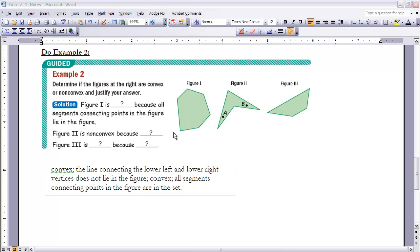Here's the answers then to those four question marks. Figure one is convex, because the segment connecting the points in the figure lie in the figure. Figure two is non-convex, because the line connecting the lower left and the lower right vertices does not lie in the figure. And then finally, figure three is convex, because all segments connecting points in the figure are in the set.